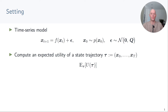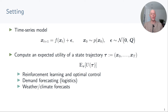In many applications we're interested in computing an expected utility where the expectation is taken with respect to state trajectories tau. A trajectory is a sequence of states from the initial state at time zero to a final state at time t. For example, in reinforcement learning and optimal control the utility is a long-term reward or cost. But these kinds of utilities also appear in other areas, for example in logistics when we forecast demand and associated costs, or when doing weather forecasting which can be used for assessing the risk level of flooding.